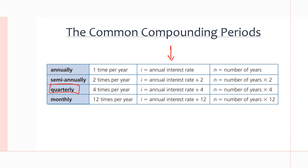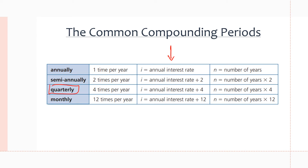For quarterly compounding, we earn interest 4 times a year, so I equals the annual rate divided by 4 and N equals the number of years times 4. For example, at 8% annually compounded quarterly, you earn 2% every 3 months. For monthly compounding, I equals the annual rate divided by 12 and N equals the number of years times 12. For example, at 12% annually compounded monthly, you earn 1% interest every month.